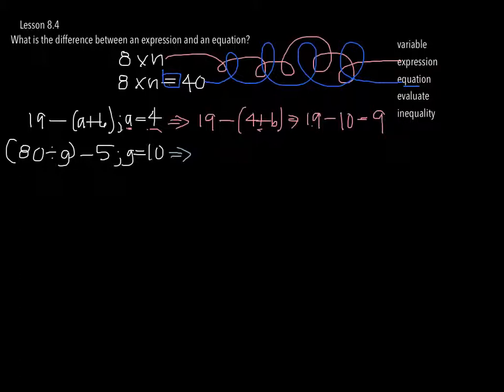First, what we're going to do is plug in wherever we see g, we're going to plug in 10. So it's 80 divided by 10 less 5. Now let's simplify the 80 divided by 10, which is going to be 8, and we're going to subtract 5. 8 subtract 5 is going to give us 3.